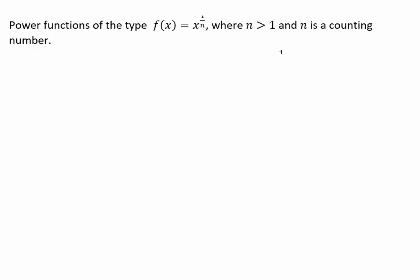So depending on whether n is even or odd, we'll first of all determine the domain. Because we cannot have even root of a negative number. So whenever n is even, our domain will be restricted to 0 or more.